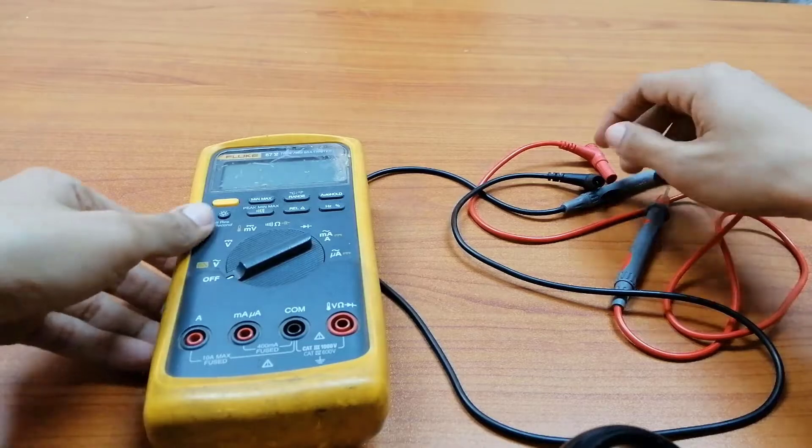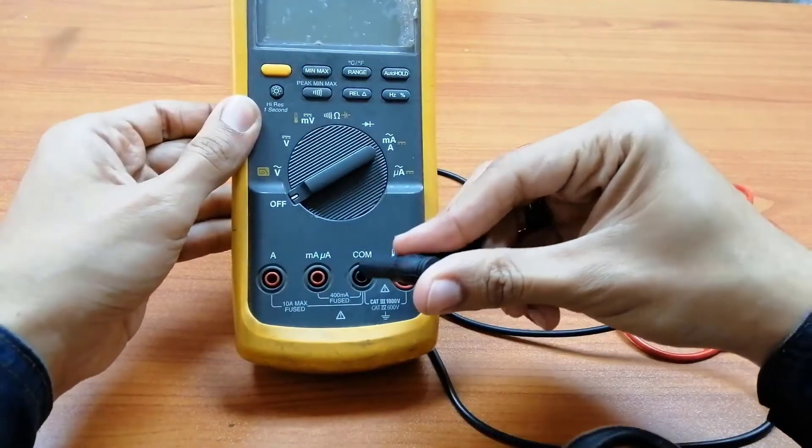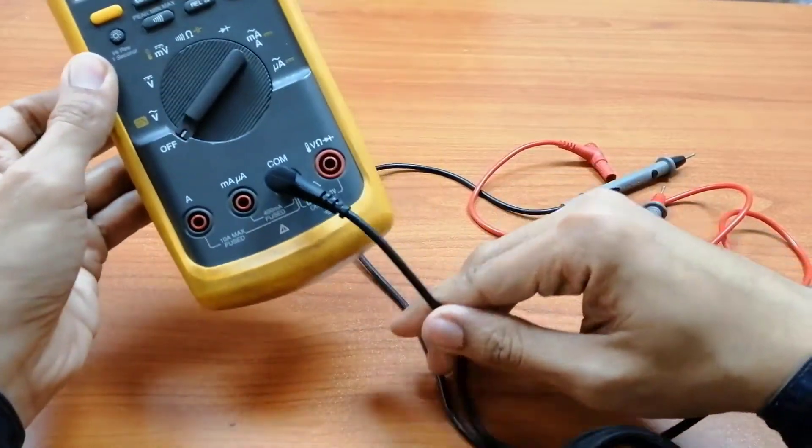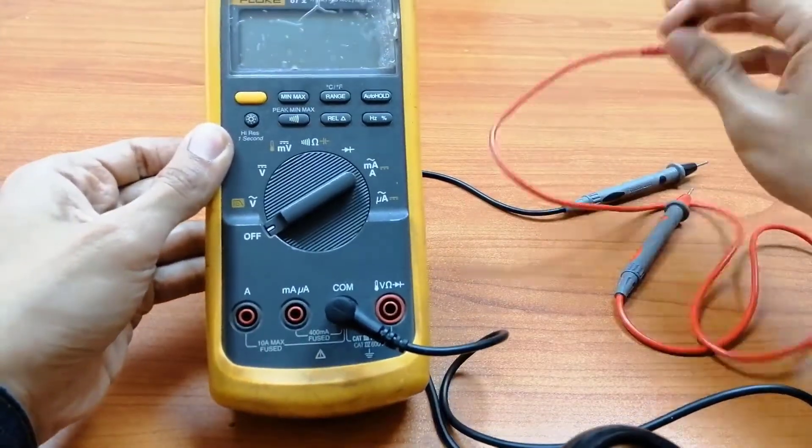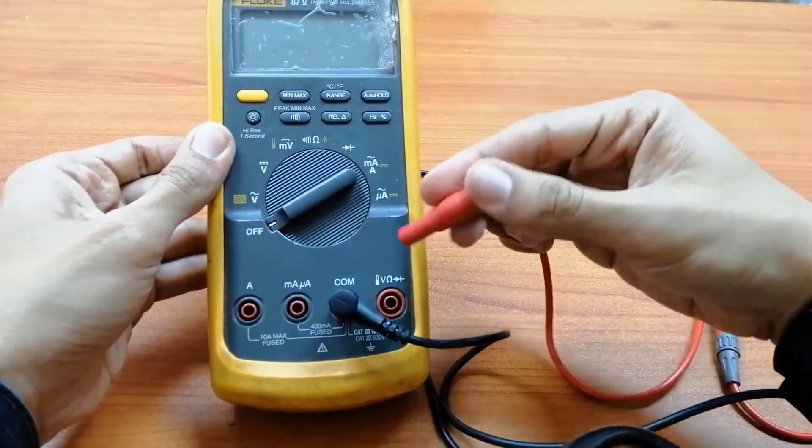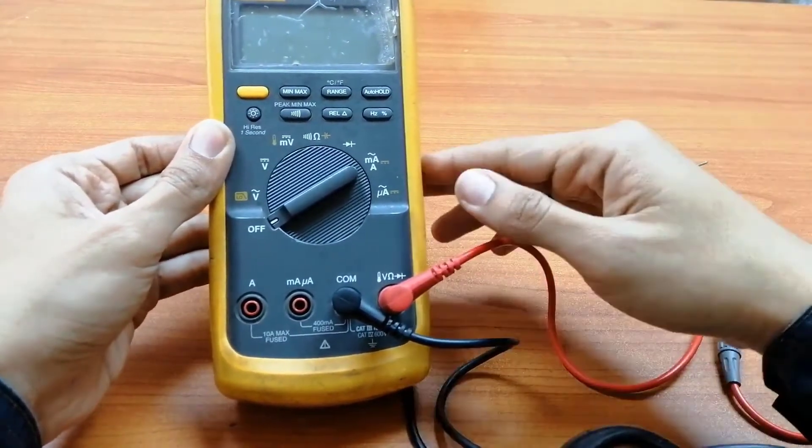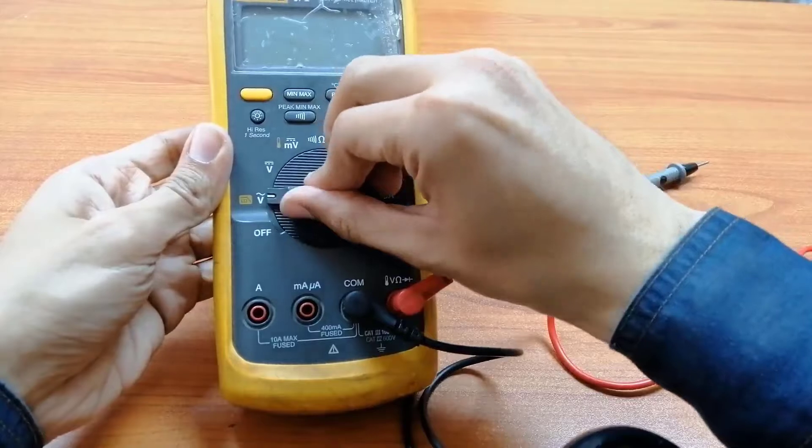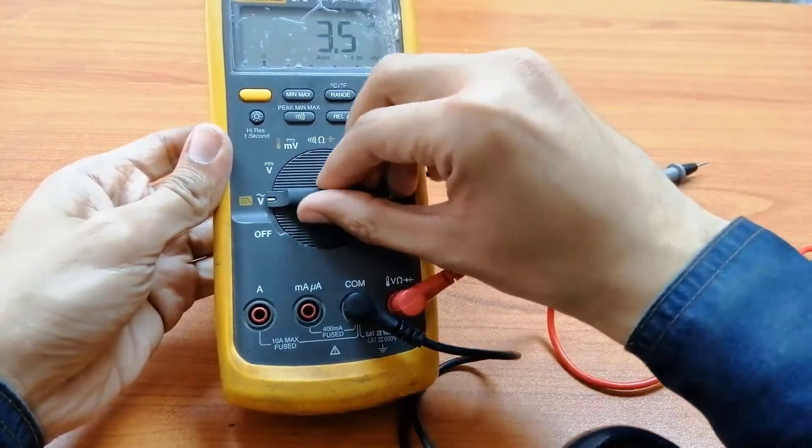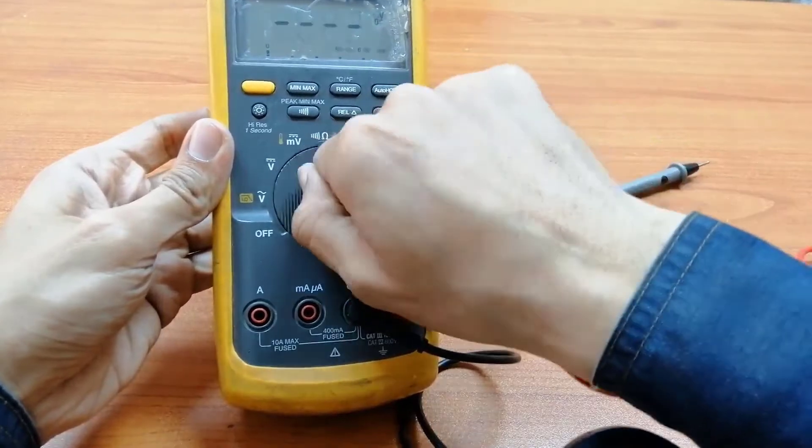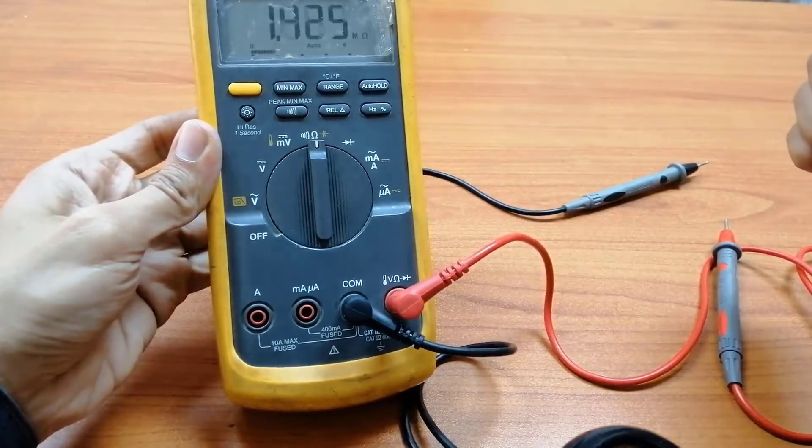We will always connect the black cord in the common terminal, always. And the red wire on the V and ohm terminal if we want to measure voltage or ohm. Here we could change the selector to voltage for AC or DC, or we could measure ohm with it.